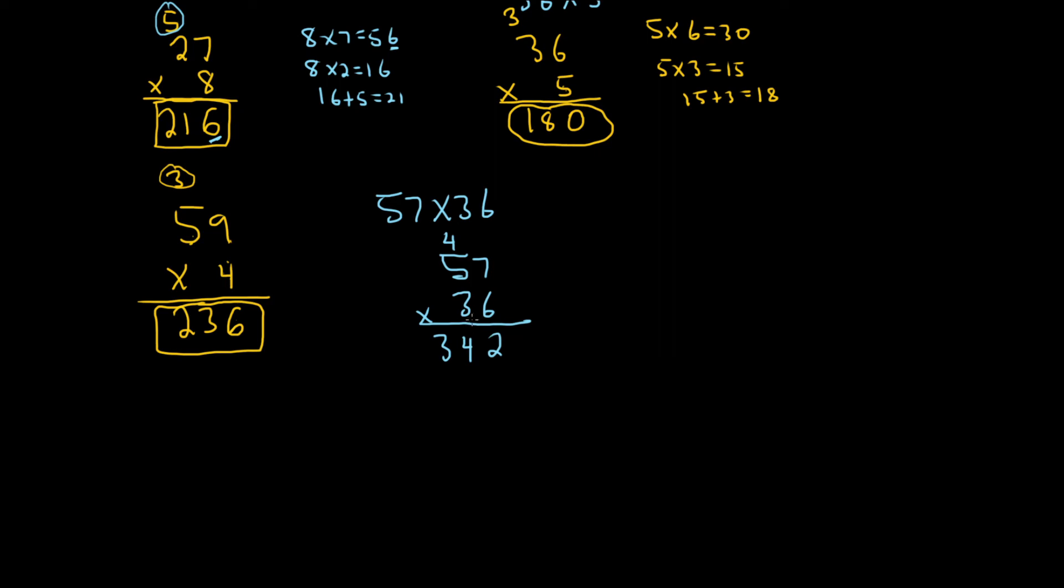So now what we do is we do the 3. But now I'm going to write the result in a different place. Watch this. 3 times 7 is 21. I'm going to put the 1 here. You see, I didn't put it under the 2. You put it next to it, under the 3. See how it's under the 3? So 3 times 7 is 21, you carry the 2. 3 times 5 is 15, plus 2 is 17, and then you draw a line like this.